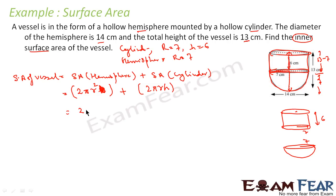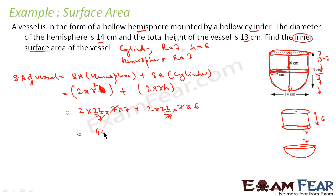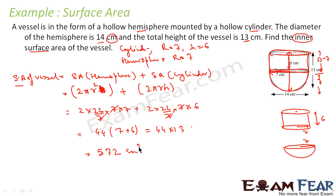Substituting values: 2 × (22/7) × 7 × 7 plus 2 × (22/7) × 7 × 6. The 7 in the denominator cancels, giving 44 × 7 + 44 × 6, which equals 44 × 13 = 572. Since we are talking about surface area in centimeters, the unit is centimeter square. Please do not forget to mention the unit — that is critical.